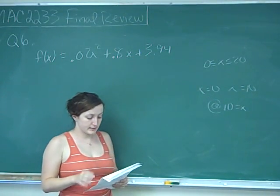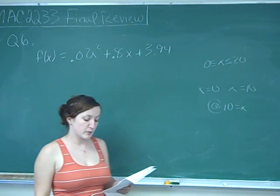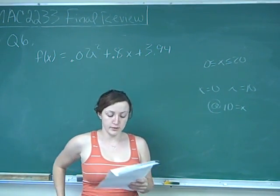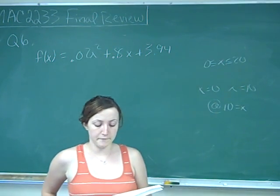This is question number 6 and it says per capita consumption of carbonated drinks in the United States can be modeled by f of x equals 0.02x squared plus 0.8x plus 3.94.